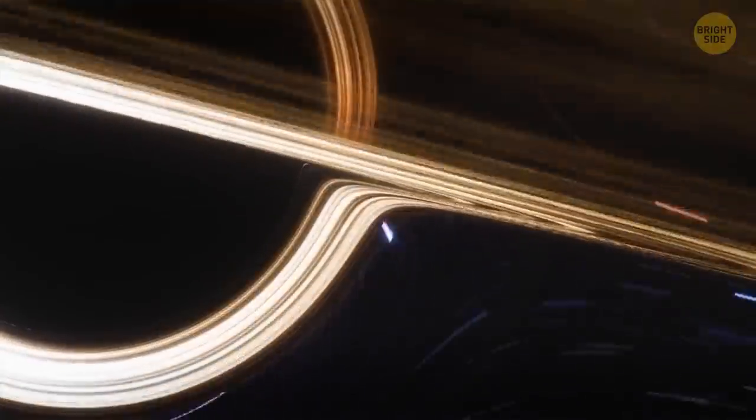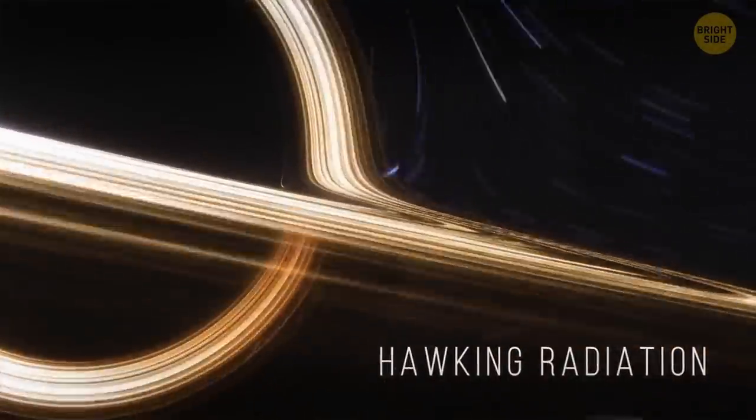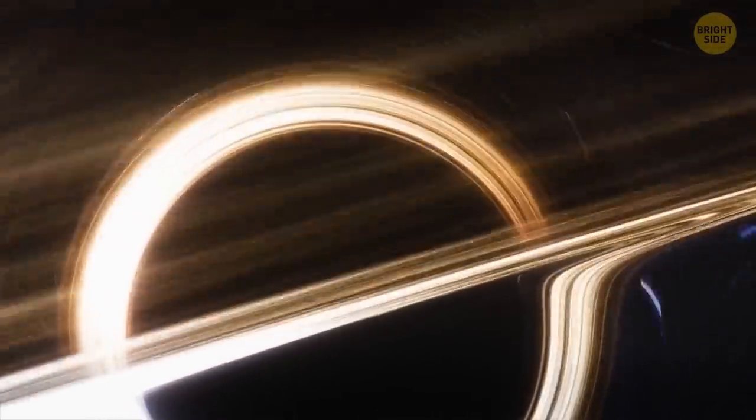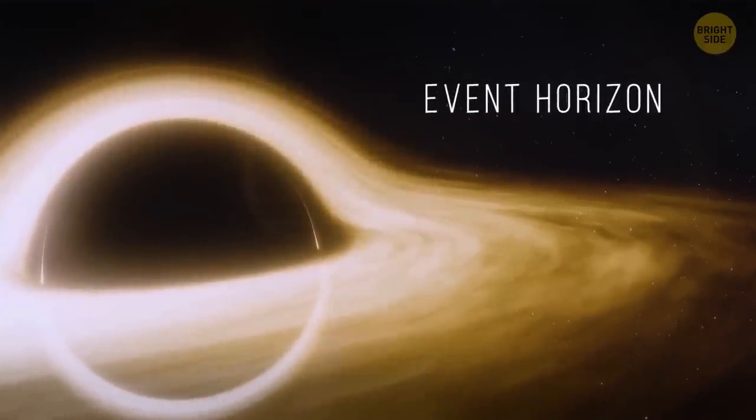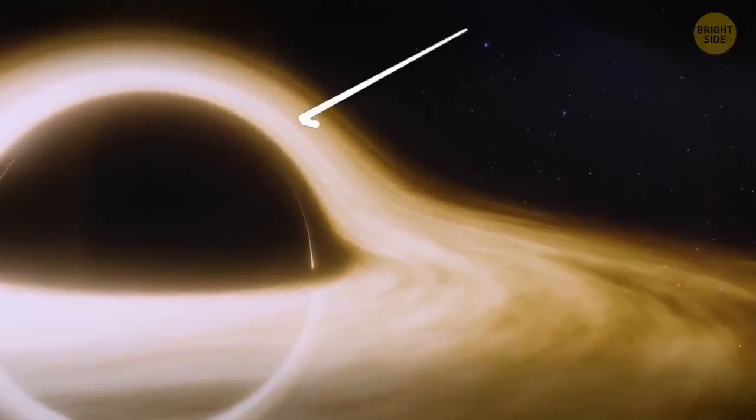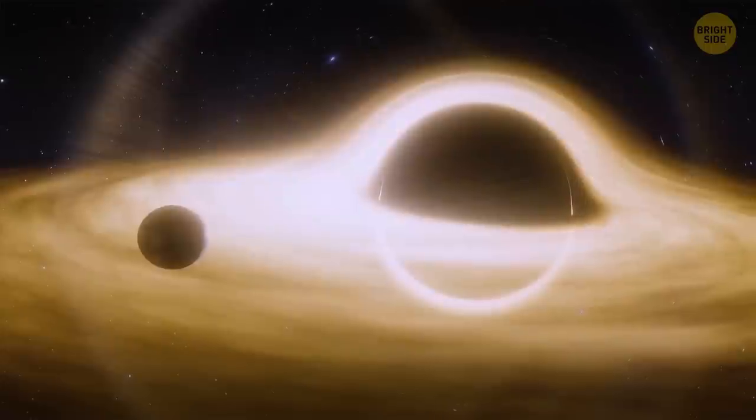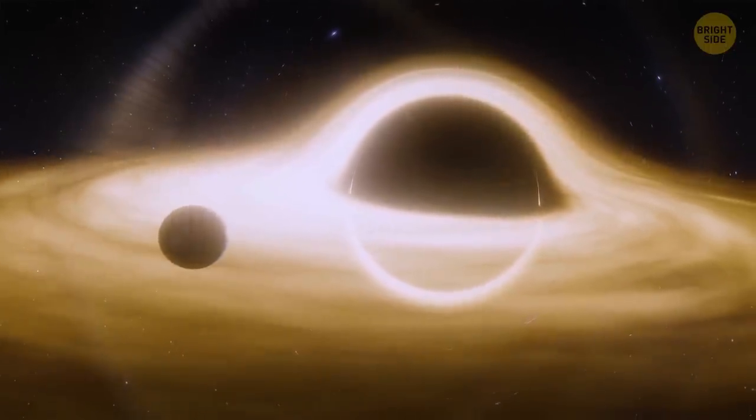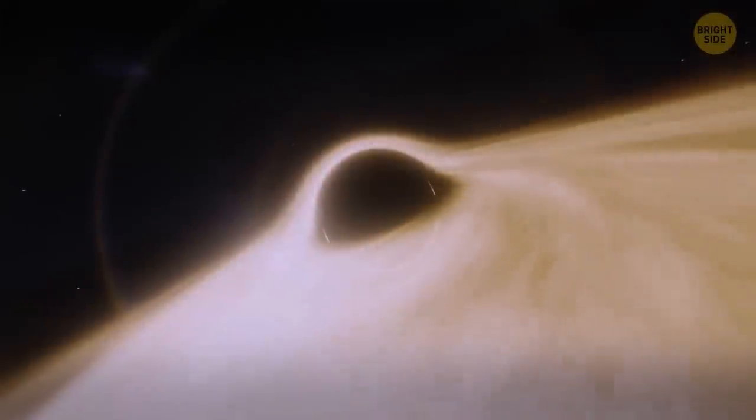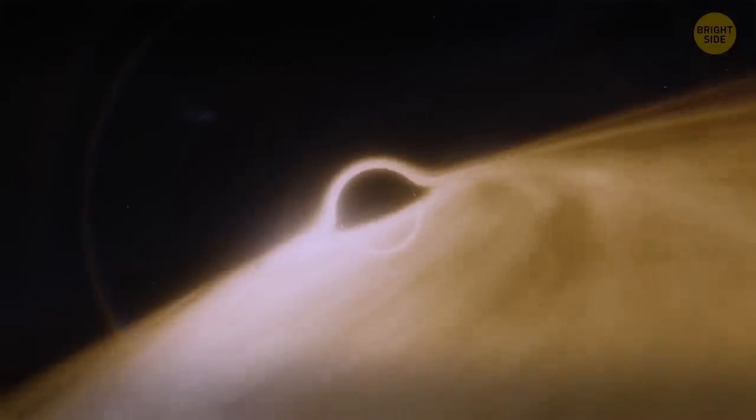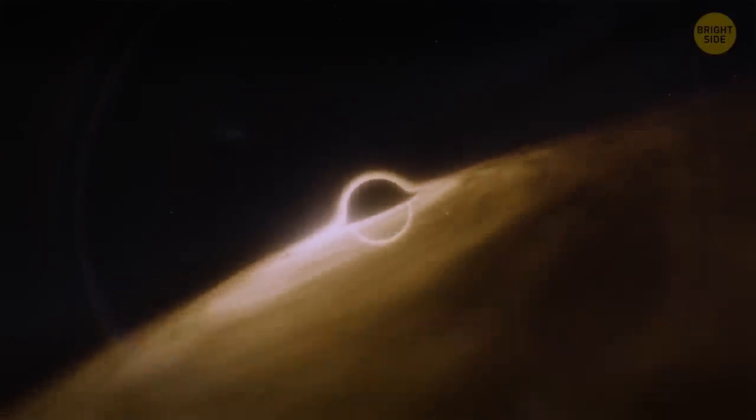Black holes lose their mass because of a thing called hawking radiation. Their event horizons are becoming smaller. But this process is very, very slow. A black hole's event horizon is a point of no return. It's like a boundary that surrounds a black hole. And nothing, including light and radiation, can escape once it crosses this boundary. The average black hole would need billions of times the age of our universe to disappear completely.